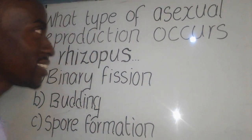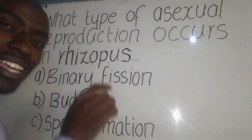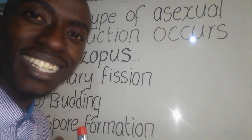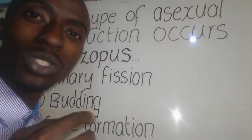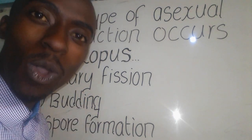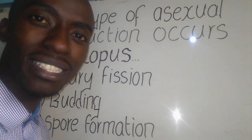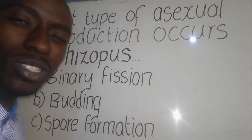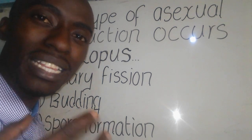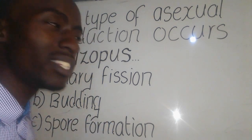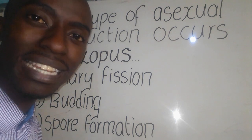A biology question asks: what type of asexual reproduction occurs in Rhizopus? Asexual reproduction is a type of reproduction where one parent produces one or more genetically identical offspring without the fusion of gametes. Rhizopus is a type of saprophytic organism that obtains its food from decayed matter. We have different types of asexual reproduction: budding, binary fission, and spore formation.